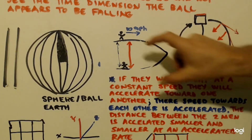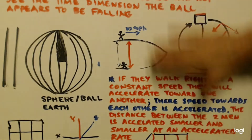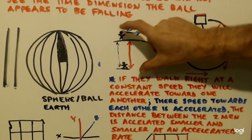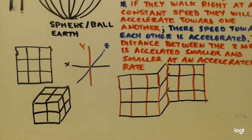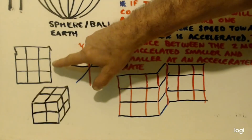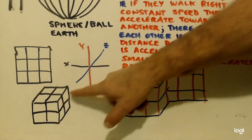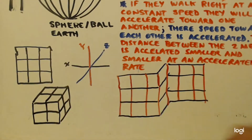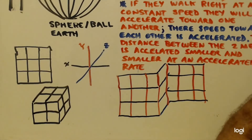Now, if these straight lines were on a flat material instead of a curved material, they could walk forever and never converge — they would never accelerate towards each other, ever. Now here's a two-dimensional grid, and here's a three-dimensional grid. It's a lot easier to talk about two-dimensional stuff than three-dimensional stuff, so from now on we're going to be talking about the two-dimensional stuff and forget about the other dimensions.